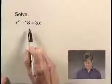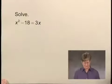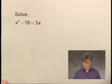We're going to solve an equation. We have the equation x squared minus 18 equals 3x, and I'm going to begin by subtracting 3x on both sides so that I have zero on one side of this equation.